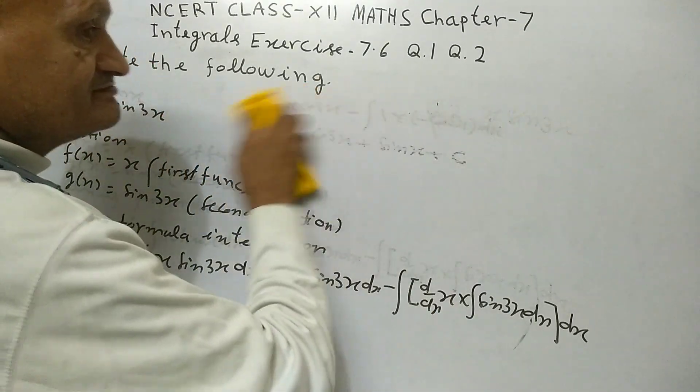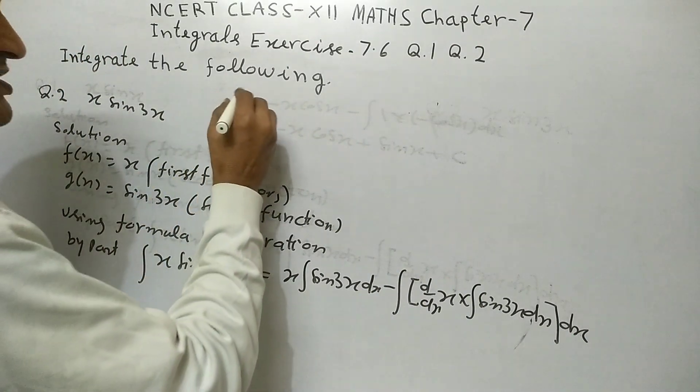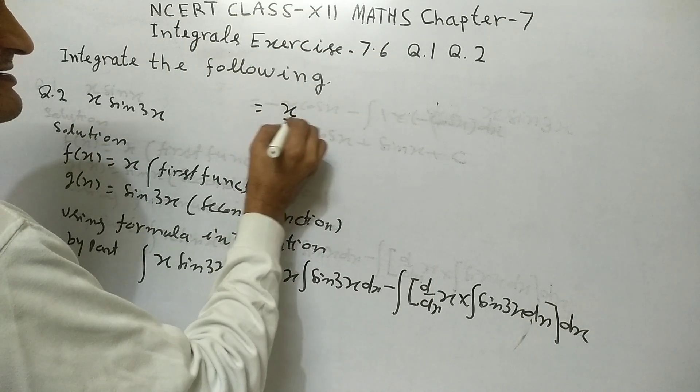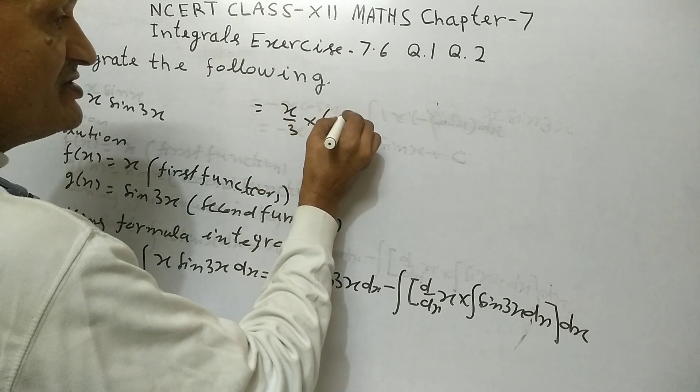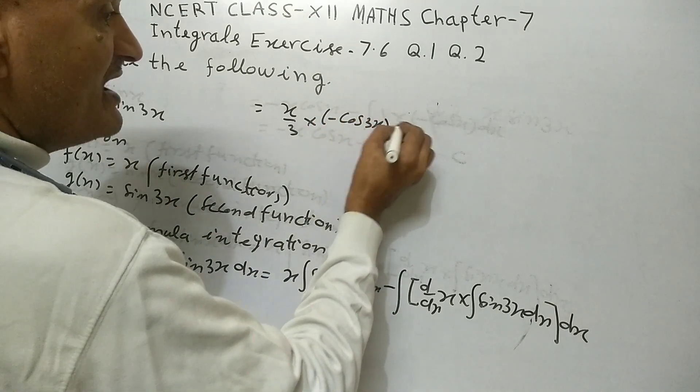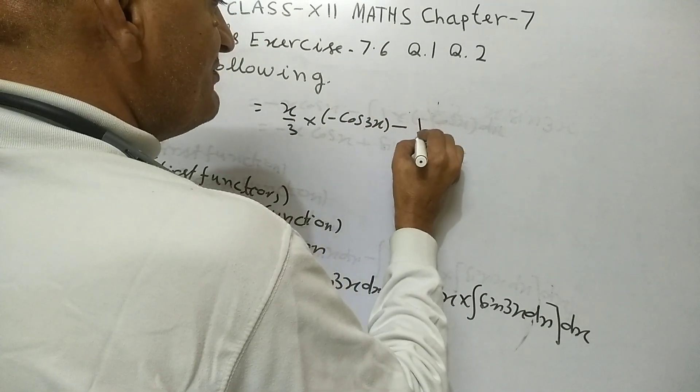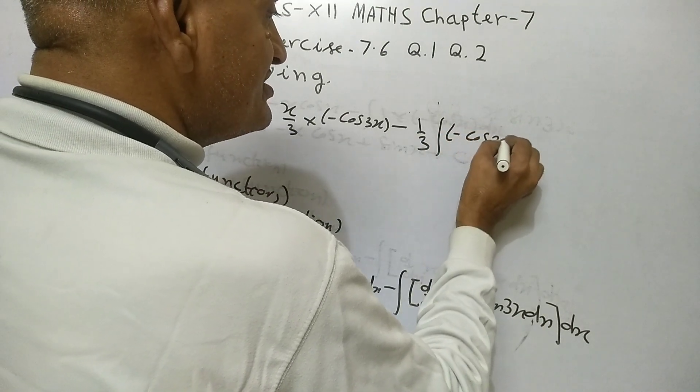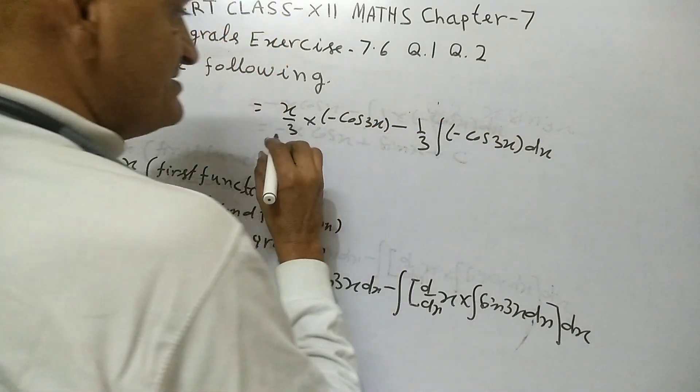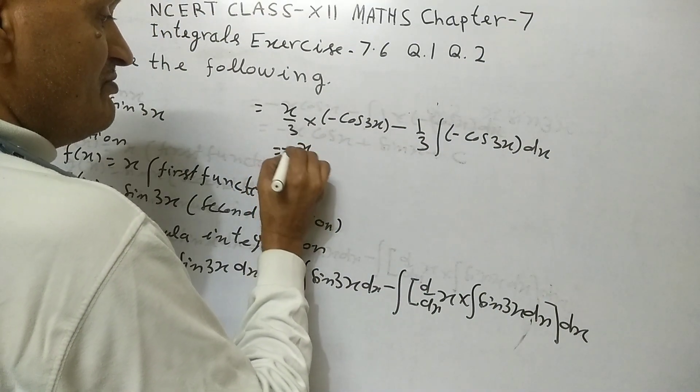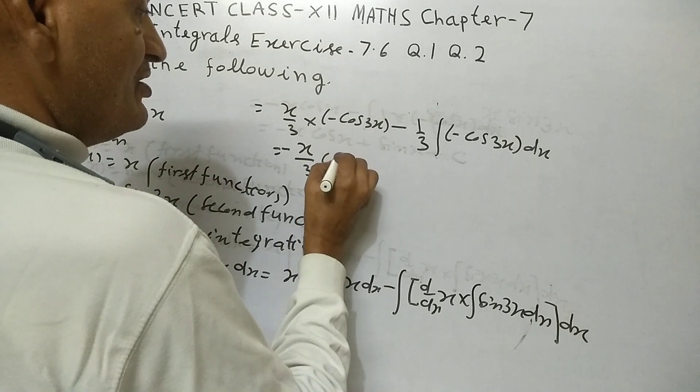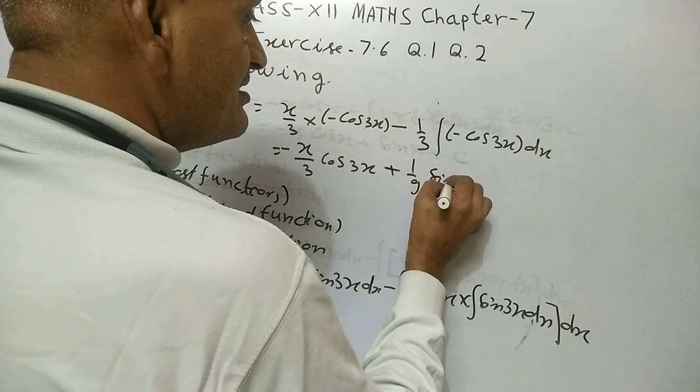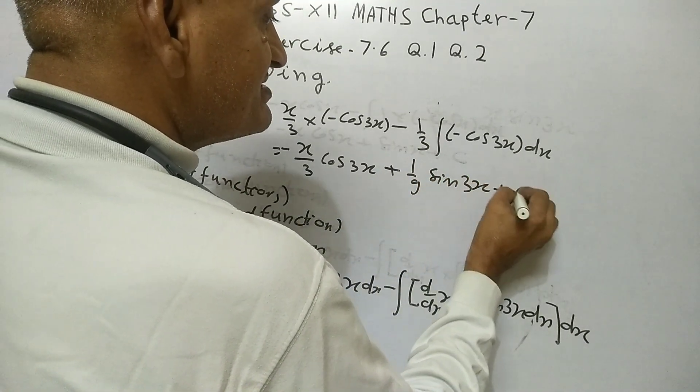Equal x upon 3 into minus cos 3x minus 1 upon 3 integration minus cos 3x dx plus 1 upon 9 sin 3x plus c.